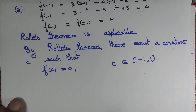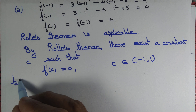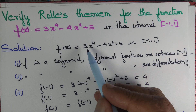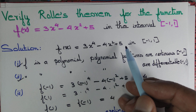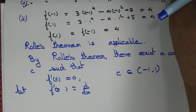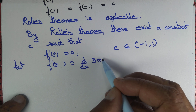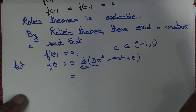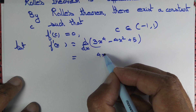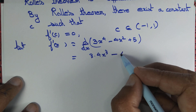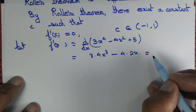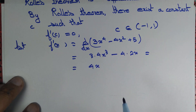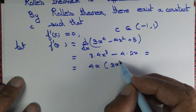So what is f'(x)? We have f(x) = 3x⁴ - 4x² + 5. Differentiating: the derivative of x⁴ is 4x³, and the derivative of x² is 2x. Taking 4x common, we get f'(x) = 4x(3x² - 2).